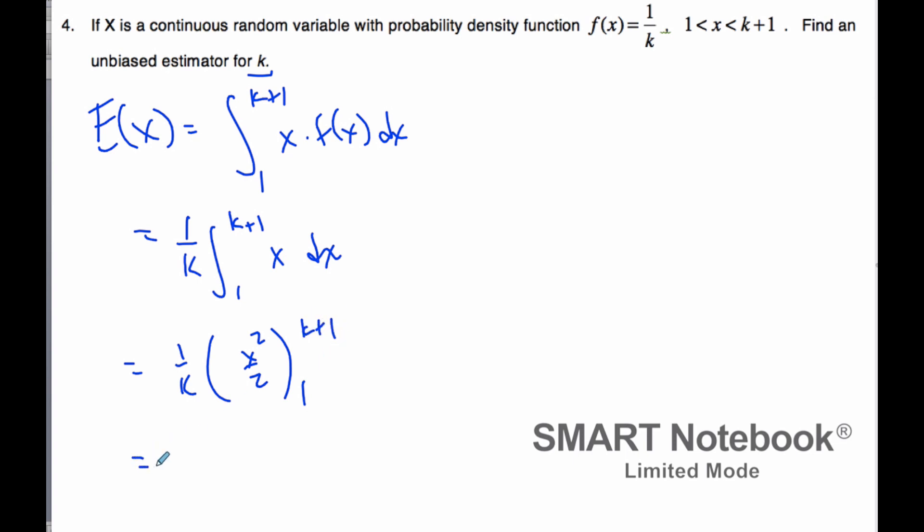When I plug these values in, I get (k plus 1) squared times 1 over 2k, minus 1.